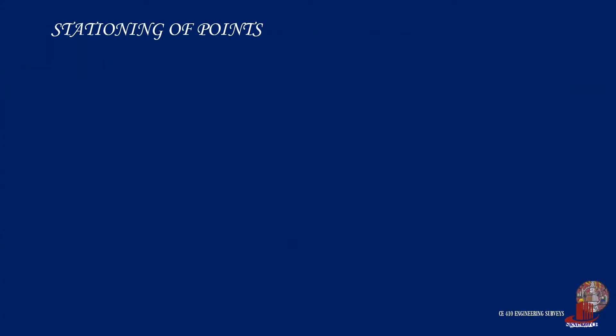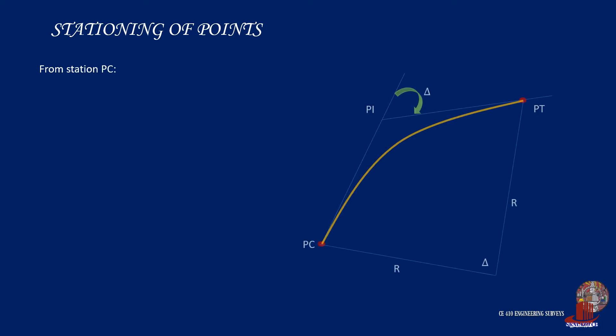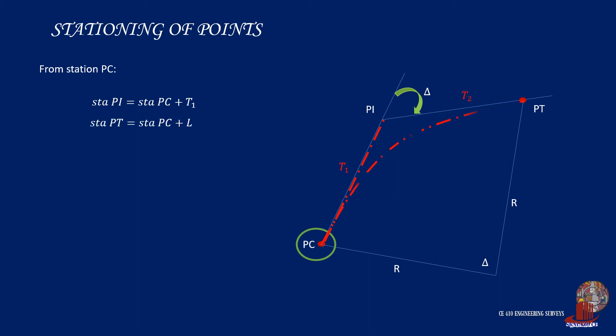In case PC is known, the station of the point of intersection PI can be determined by adding the distance of the back tangent T1. In case we are to find the station of PT from PC, all you need to do is add the length of the curve L.